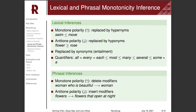Our system contains three inference modules. The first two are lexical and phrasal monotonicity inferences. The lexical inference is word replacement based on monotonicity information for key tokens, such as nouns, verbs, and quantifiers. The word replacement relies on background knowledge from lexical knowledge sources, including WordNet and ConceptNet.